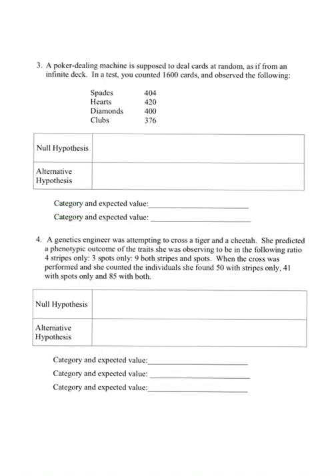My third example is that a poker dealing machine is supposed to deal cards at random, as if it were from an infinite deck. In a test, you counted 1,600 cards and observed the following: spades 404, hearts 420, diamonds 400, and clubs 376. Now if you are expecting it to be an infinite deck dealt randomly, you would expect the numbers of each of the four suits to be equal to each other.